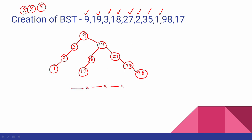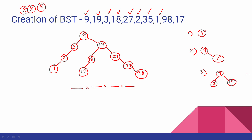I will draw a step-by-step diagram for the exam. After inserting 9: just node 9. After inserting 19: 9 with right child 19. After inserting 3: 9 with left child 3 and right child 19. You can score full marks by showing these steps.